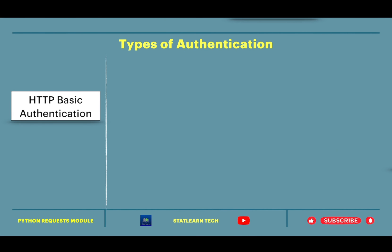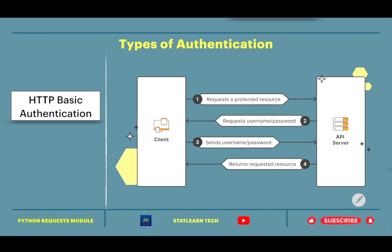Let us talk about the first type in detail: HTTP Basic Authentication. As you can see in the diagram, the client wants to access the server. First, the client makes a request to access some protected data. The server asks for a username and password. The client sends another request, this time including the username and password, and the server responds with the actual data if the credentials are correct.